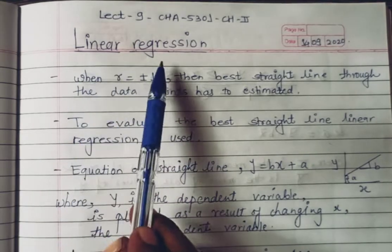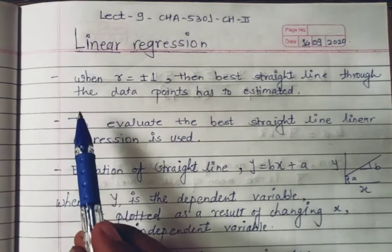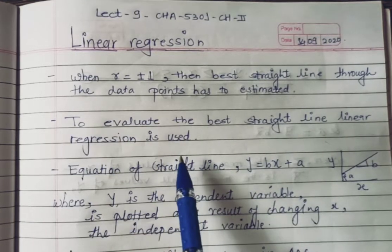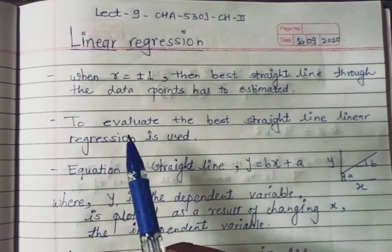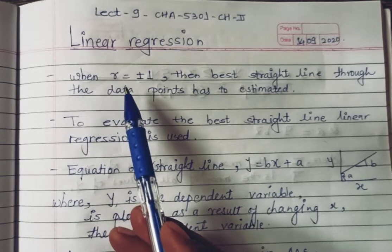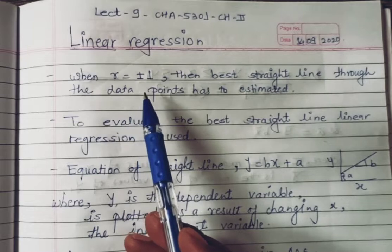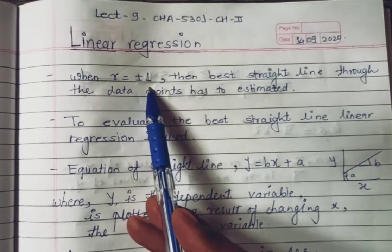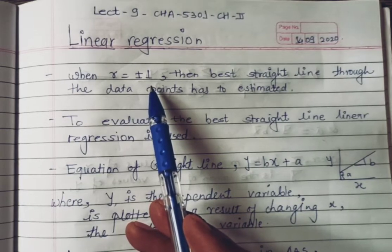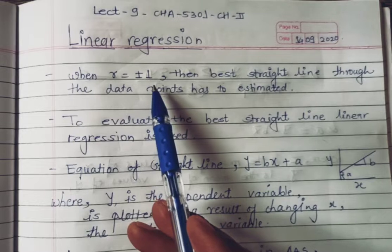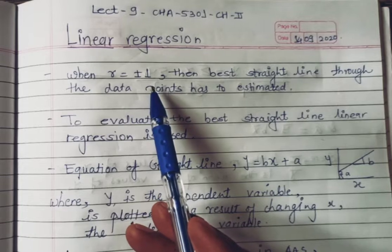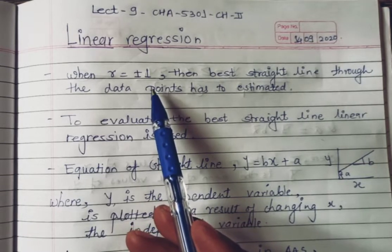The next topic is linear regression. Once a linear relationship has been shown to have high probability by the value of correlation coefficient r, we can identify whether a linear relationship is present or not. The r value is between plus and minus 1. When r is plus 1 there is a positive linear relationship, when r is minus 1 there is a negative linear relationship, and when r equals 0 there is no relation between x and y.